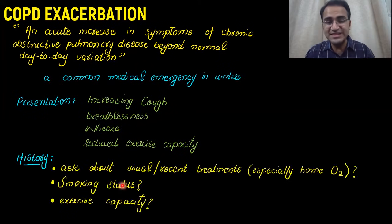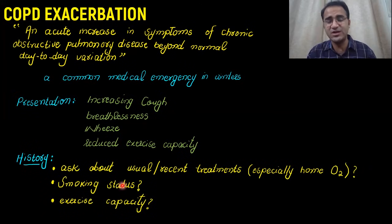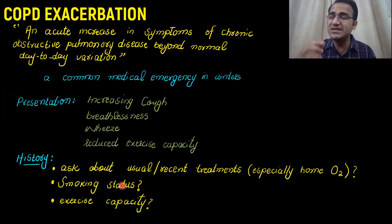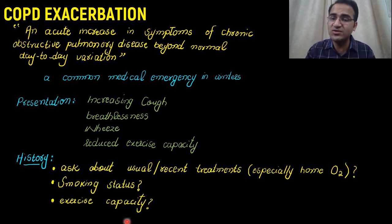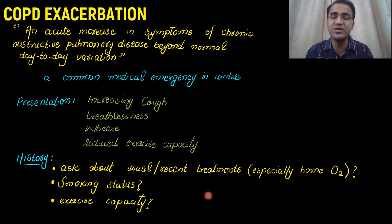When you are taking history, you need to ask about the usual and recent treatment that these patients are receiving. Chronic obstructive pulmonary disease is a chronic disease due to lung damage, and these damaged lungs cannot maintain oxygen saturation. So these patients are mostly put on home oxygen therapy — you need to ask about home oxygen therapy.